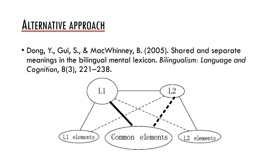More recent views of the bilingual lexicon assume that it is even more complicated. This is a schema of a shared-distributed asymmetrical model by Yang Ping-dong, Shichun Gui, and Brian McGuini. The authors argue that there is a shared storage for the conceptual representations of the bilinguals' two vocabularies, and there are asymmetrical links between concepts and forms in the two languages. This model can cover bilinguals with very different language dominance, predicting that the dominant L1 language would have stronger links to the common elements than the weaker second language. Importantly, the model also suggests that bilinguals maintain specific conceptual elements for both languages.